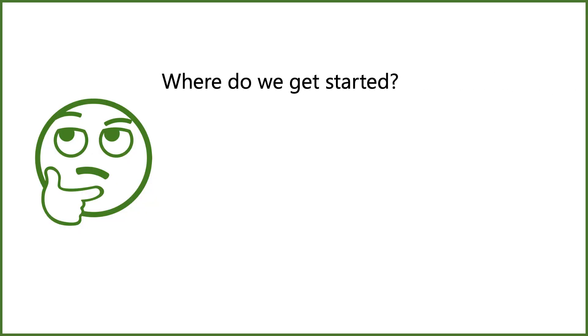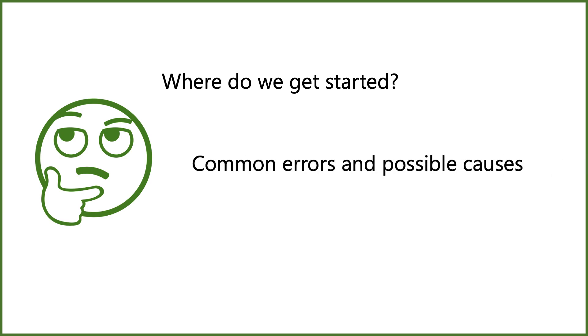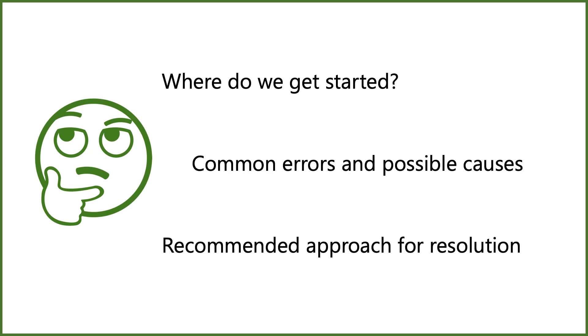We all wonder where the bottleneck really is — is it on the application side, on the database side, or somewhere in between because of how the application and database are talking to each other? Whatever the issue, the first and biggest question is: how do I identify where the issue lies and what is the cause? Only then can I go ahead and fix it. So Sai, where do we get started? What are some common errors, their possible causes, and the most recommended approach to isolate and resolve these issues?